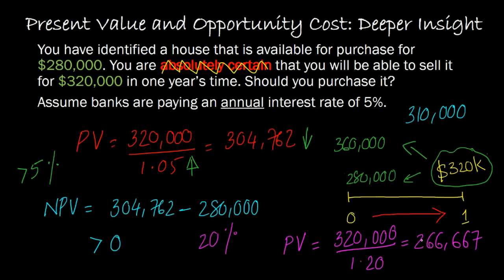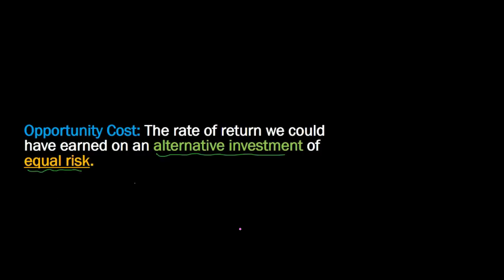which gives you approximately $266,667. And now all of a sudden, this investment doesn't seem worthwhile because you'd be spending $280,000 to get $266,667. You'd be better off taking the same amount of money and putting it in an alternative investment that is as risky, because the rate of return you're generating on those is higher. So again, the key here is that opportunity cost, or your discount rate, is always the rate of return that you could have earned on an alternative investment of equal risk.